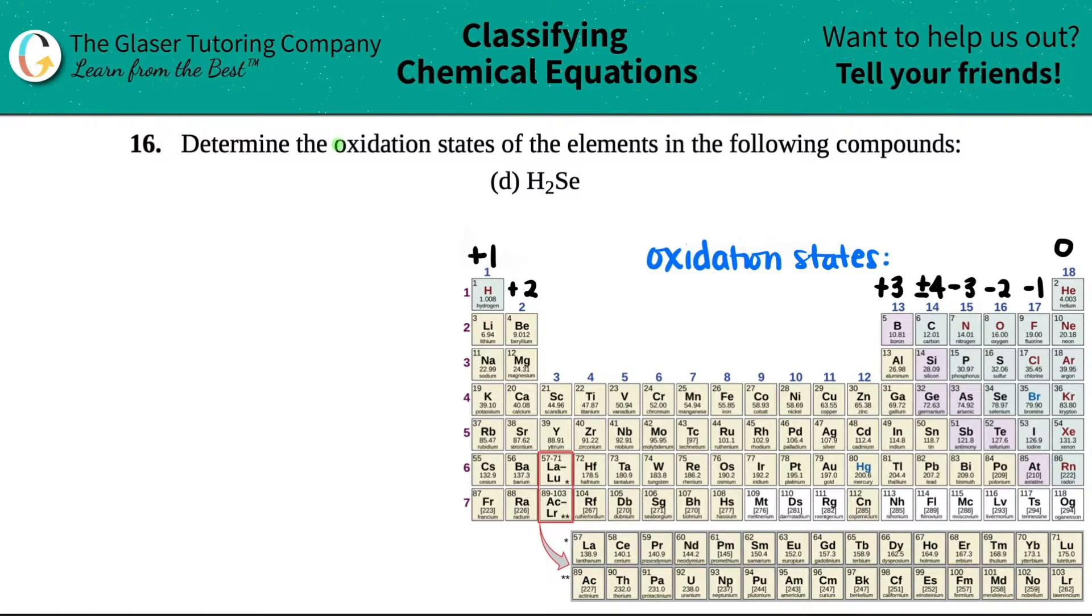Number 16, determine the oxidation states of the elements in the following compounds. In this case we have to find the oxidation state for H₂Se.